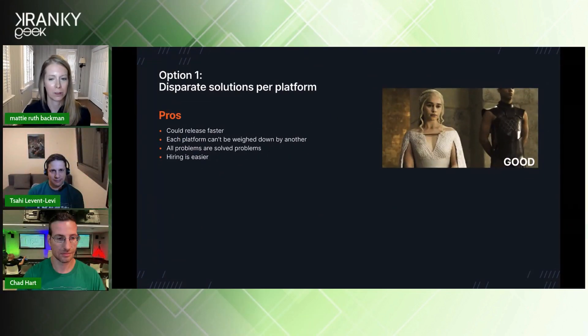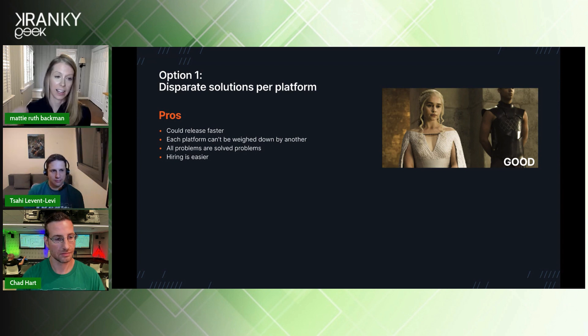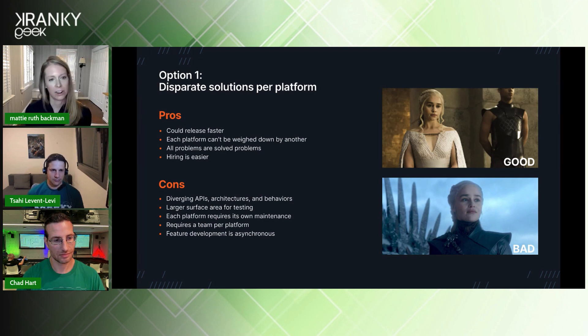Step three in the quest was to consider our options — really only two. Option one was to do what most people do and simply build disparate solutions for every platform. The advantages are being able to release faster, not letting any one platform be bogged down by another, all problems would be solved problems, and hiring is easier. The downsides are diverging API designs and architectures, a much larger surface area for testing, each platform requiring its own maintenance and team, and feature development being asynchronous per platform — every feature built, tested, and documented multiple times.